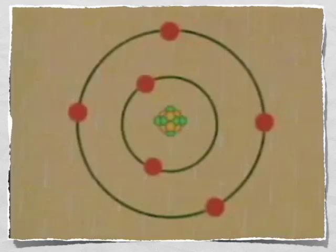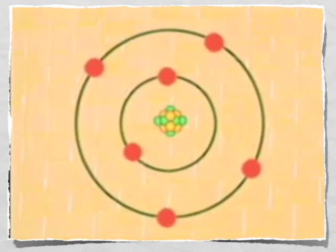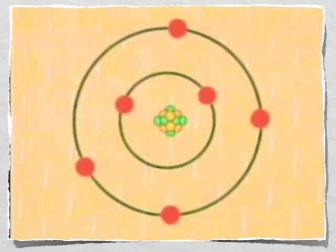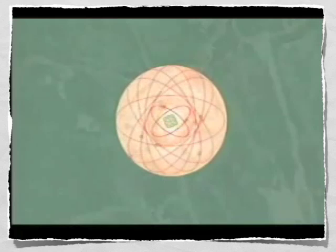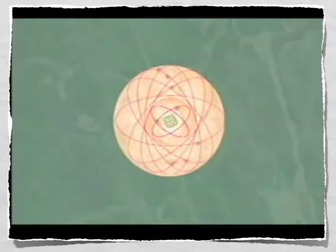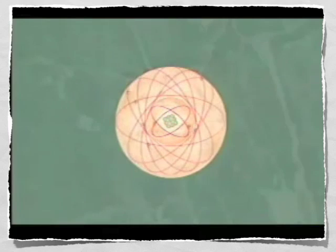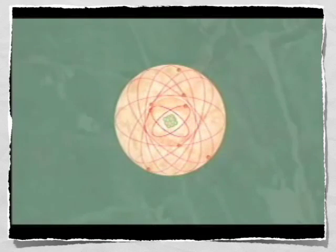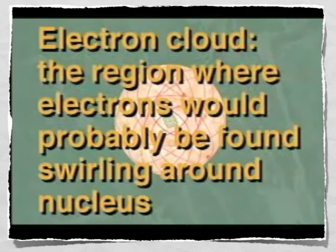While today scientists agree that electrons orbit the nucleus in energy levels, they do not do so in regular paths. Instead, electrons dart in ever-changing paths within energy levels, forming what is referred to as an electron cloud. The electron cloud represents the region where electrons would probably be found swirling around the nucleus of an atom.